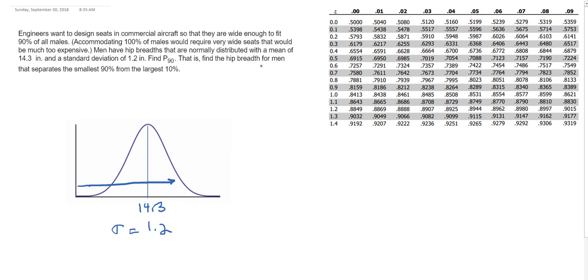It says find P90, the 90th percentile. So basically what I'm doing is I want to know what value of X would cut off this top 90%. I want to use my Z equals X minus the mean over the standard deviation formula, but I'm going to be solving for X.